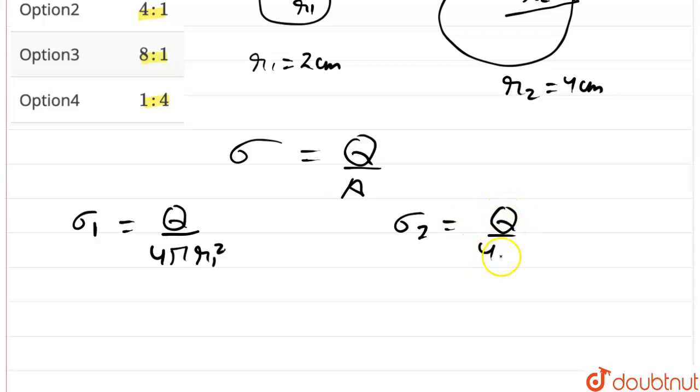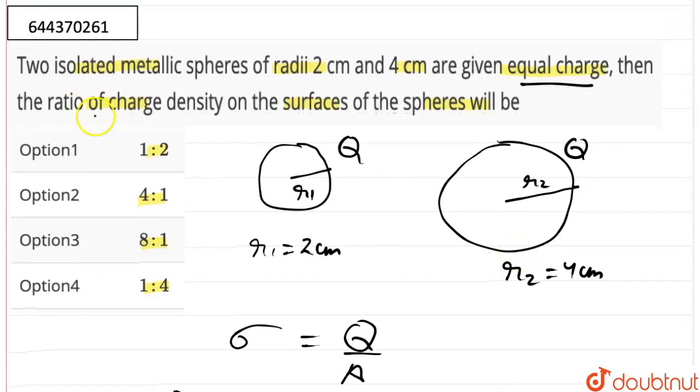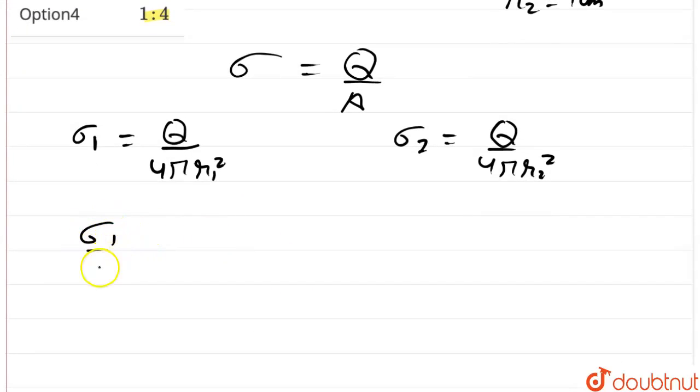Now we have to find the ratio of these charge densities, so sigma 1 upon sigma 2 would be Q upon 4πr1² multiplied by 4πr2² upon Q.